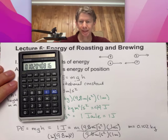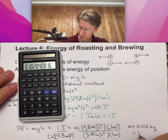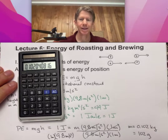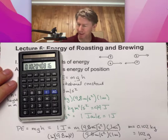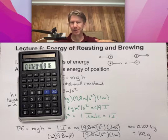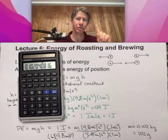It will be one divided by 9.8 equals 0.102 kilograms. Our scales read in grams, so about 102 grams. So if we drop something that is 102 grams from a height of about one meter, that is the potential energy stored that is equal to one joule.